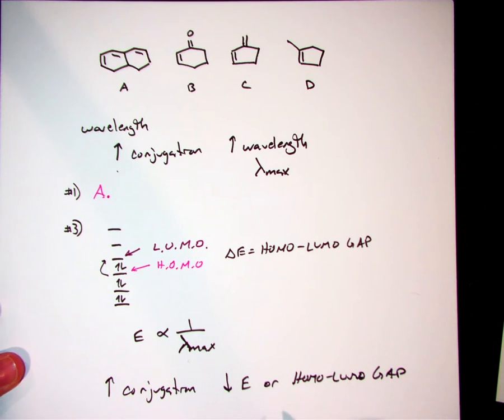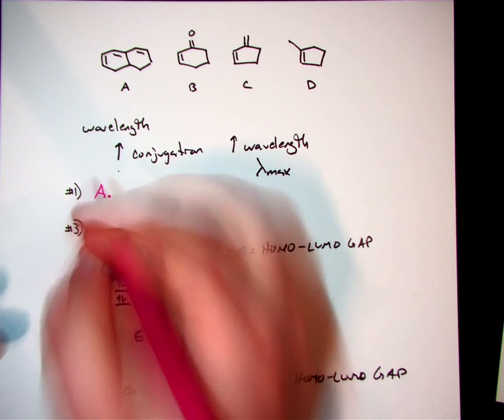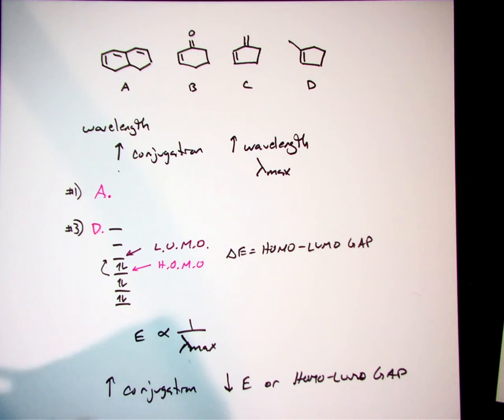In the question that asks which of these would have the largest HOMO-LUMO gap, larger energy means smaller conjugation. So D is the answer that we're looking for in that particular case. The answer to 3 is going to be D.